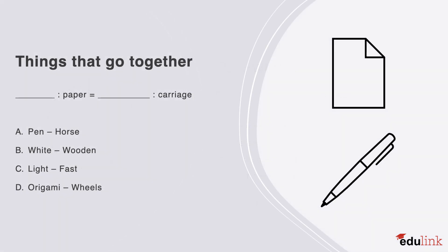The next relation type is things that go together. Consider the following options. The correct answer is A. A pen often goes with paper, and a horse with a carriage.